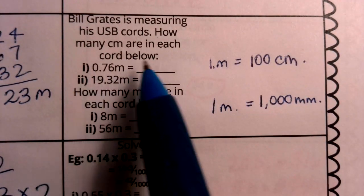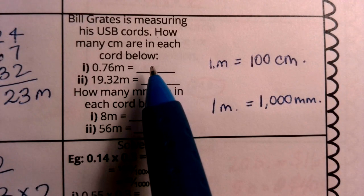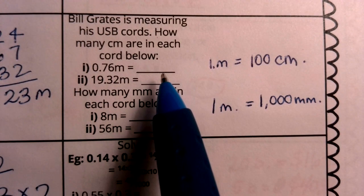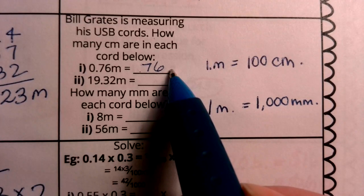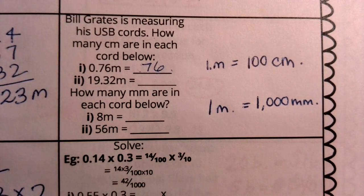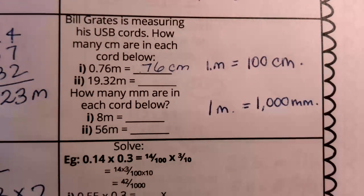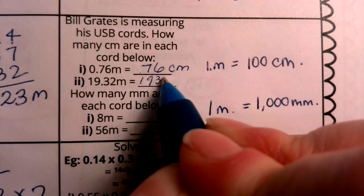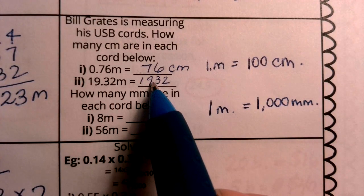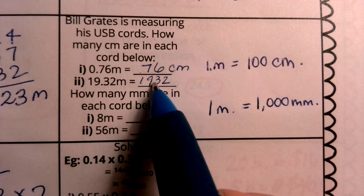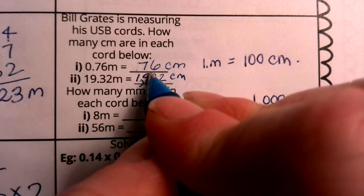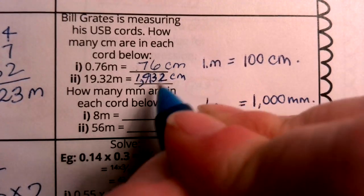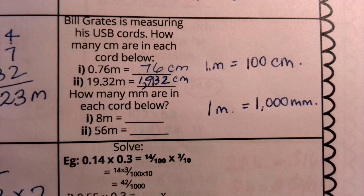Bill Gates is measuring his USB cords. How many centimeters are in each cord below? Well, if I have 0.76 meters and I want to convert that to centimeters, remember boys and girls, one meter has 100 centimeters. Those are equal. So I would be taking this and I would be multiplying it by 100. Or, if you're thinking about the staircase, you're going down in the staircase to the right two times. So you would take this number, our decimal was here in meters. So we're moving it two times to the right. That's where my decimal is, which really means it becomes whole number 76 centimeters. Now we're going to think about 19.32 meters. This is where my decimal started when it was meters. So to get to centimeters, we're going to move it two times to the right. This becomes a whole number. I'm going to put a comma here. That is a whole number. 1,932. Pay special attention to that one.